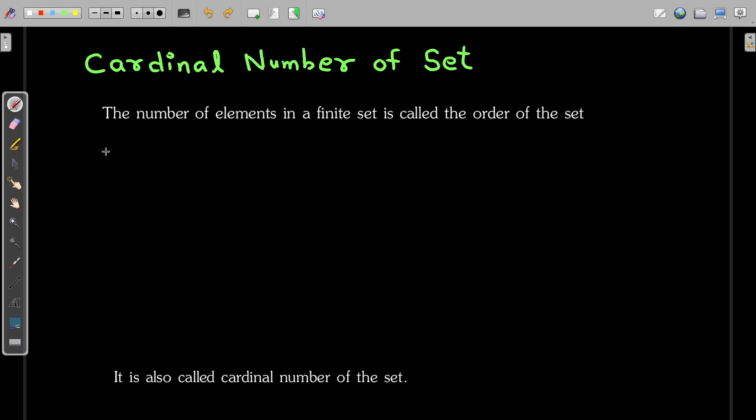Consider one example. Let us say if you have a set A and the elements of set A are 1, 2, 3. The cardinal number of any set is denoted by n(A). And how do we read it? We read it as number of elements present in A. If you observe here, how many elements are present? 1, 2, 3. So here 3 elements are present.